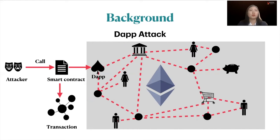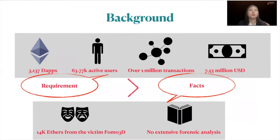In our research, we consider miscreants who launch attacks on Ethereum DApps for profit. Miscreants conduct several types of attacks by calling smart contracts, such as exploiting weak randomness or performing integer overflow to manipulate money transfers. Statistics show that as of November 2019, over 3,000 DApps on Ethereum serve 63,000 active users daily, with 1 million transactions involving over US$7 million. In our study, miscreants took funds from 14,000 users across victim DApps, yet the community's understanding of this new cybercrime is still very limited, and no extensive forensic analysis has been reported.